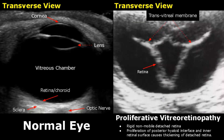This is another image of proliferative vitreoretinopathy. We see the triangle sign again with thick, non-mobile retina. Sometimes we may also see a transvitreal membrane at the anterior retina.